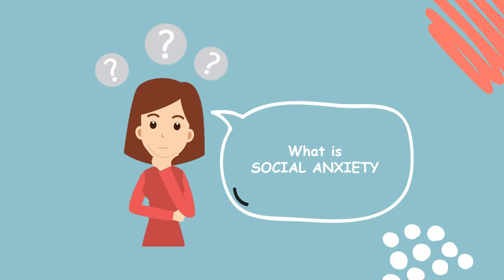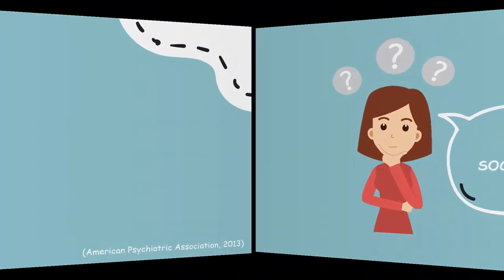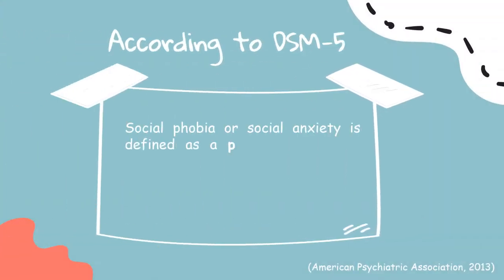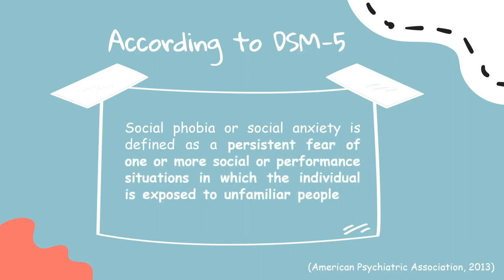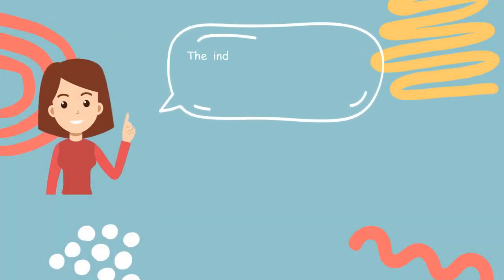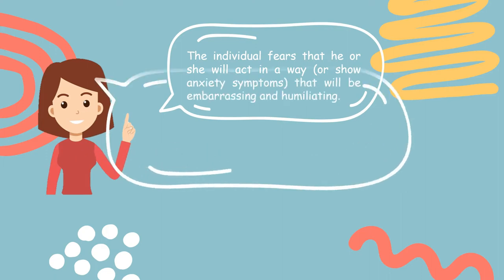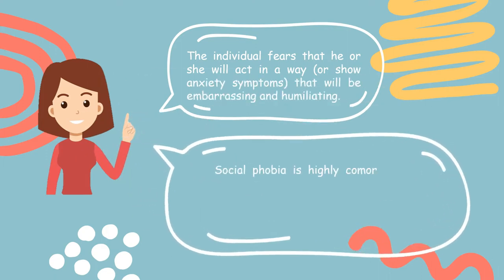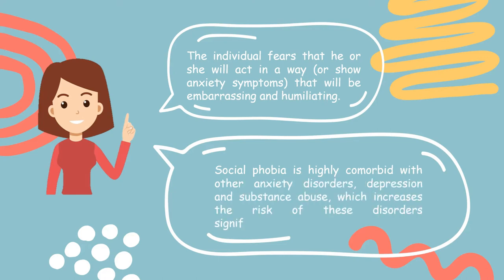What is Social Anxiety? According to DSM-5, it is known as a persistent fear of one or more social or performance situations in which the individual is exposed to unfamiliar people or to possible scrutiny by others. The individual fears that he or she will act in a way that will be embarrassing and humiliating. Social phobia is highly comorbid with other anxiety disorders, depression, and substance abuse, which increases the risk of these disorders significantly.